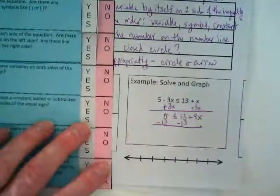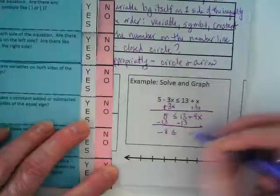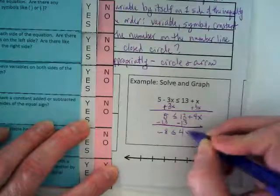5 minus 13 gives us negative 8. Negative 8 is less than or equal to 4x.